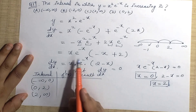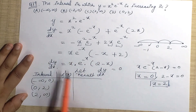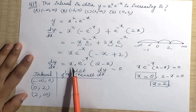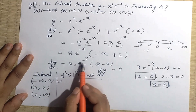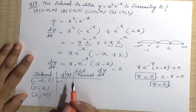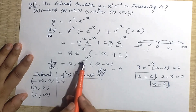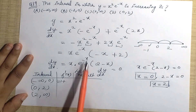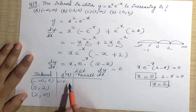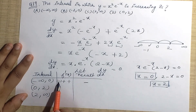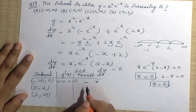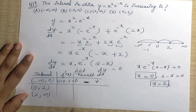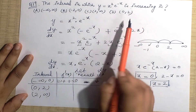For interval (-∞, 0), take x = -1: plugging into f'(x) = x·e^(-x)·(2-x). The term e^(-x) is always positive. With x = -1: x is negative, and (2-(-1)) = 3 is positive. Negative times positive gives a negative result. So f'(x) < 0 here — the function is decreasing on (-∞, 0).